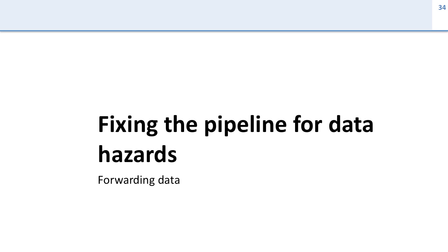We're going to talk about how we can fix the pipeline to handle data hazards without having to introduce stalls all over the place. The technique we're going to use for this is called forwarding — we're going to forward the data in the pipeline so we don't have to stall.